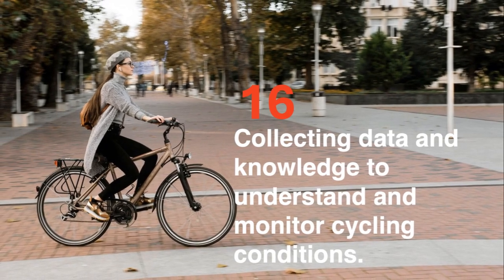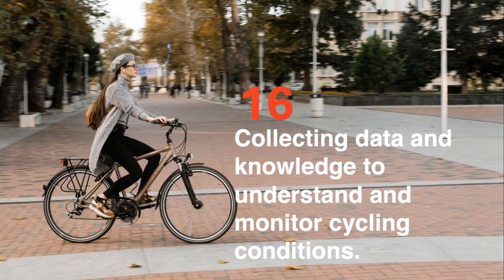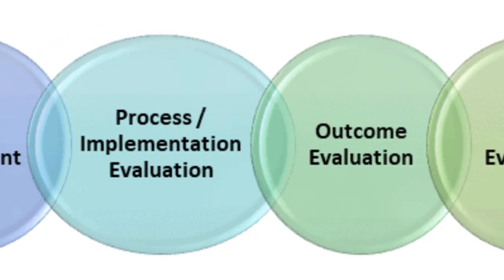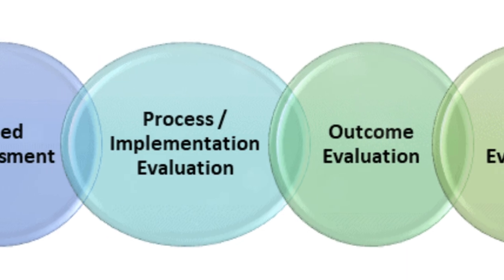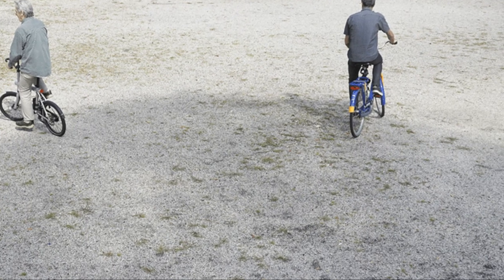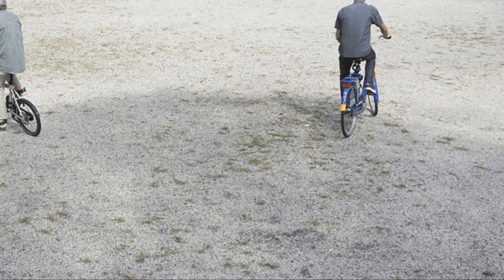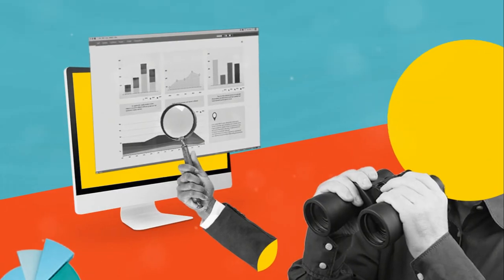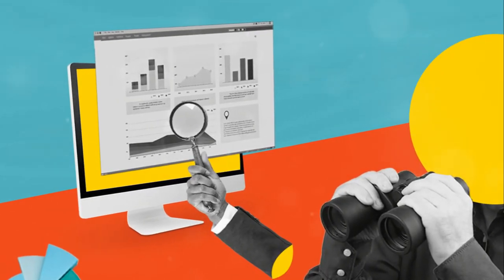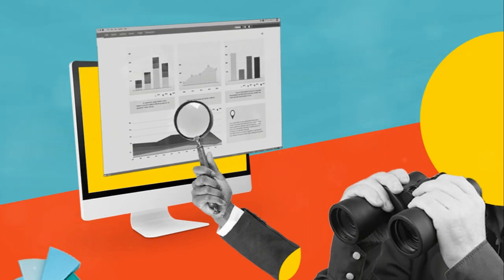How can municipalities monitor cycling conditions? Let's clear things up with five distinct levels. First, we have the no relevant activity level at all. This is where there's no effort to collect data or knowledge about cycling conditions.